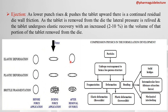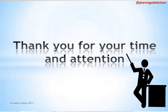In summary: elastic deformation allows the shape to be regained; in plastic deformation, shape recovery is incomplete; in brittle fragmentation, cracks propagate. The compression physics sequence is: particle rearrangement to a less porous structure, deformation and bonding — through solid bridges, intermolecular forces, or mechanical interlocking — followed by decompression and tablet ejection. Plastic deformation is the ideal condition for tablet formation. Thank you for your time and attention — please like, share, and subscribe to Pharma Guide.